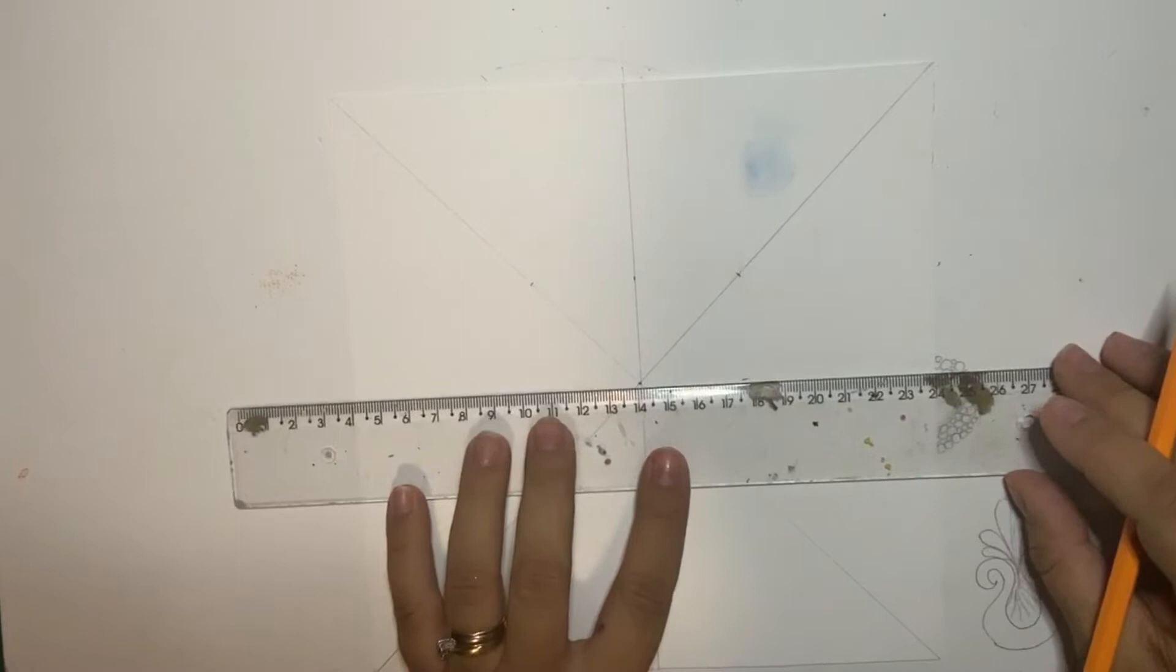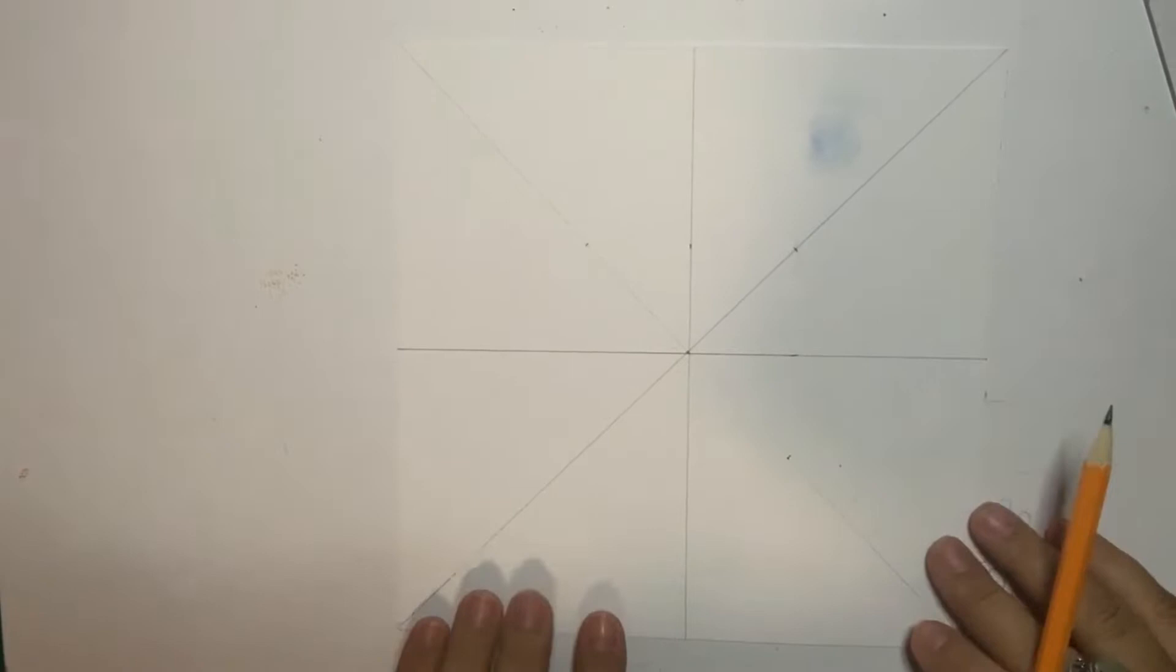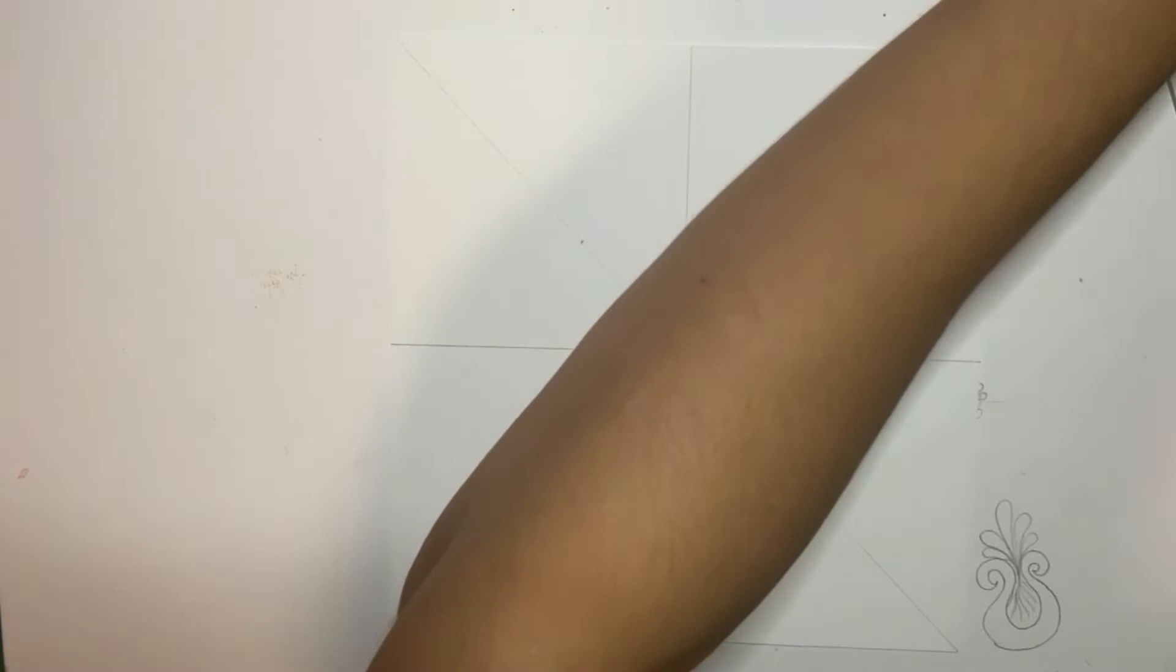Half of it is 3.5 centimeters, as you can see. And then I can draw the horizontal line and I've got divided my squared paper in eight equal parts that I am going to use to draw the mandala.